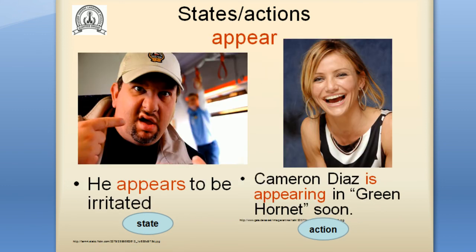The last verb: appear. 'He appears to be irritated' — it's a state because I describe the appearance. 'Cameron Diaz is appearing in Green Hornet soon' — it means she will be shown on TV soon, so it's an action verb. In example 1 I describe the appearance of the irritated man; in example 2 the verb appear means you will be able to see something on TV.